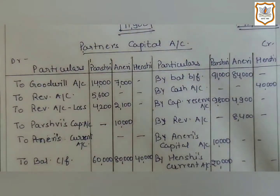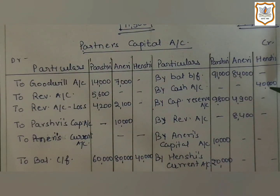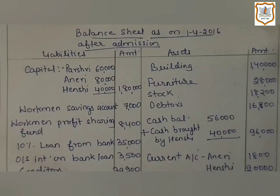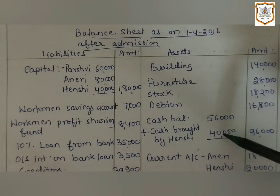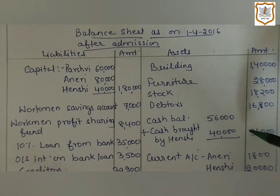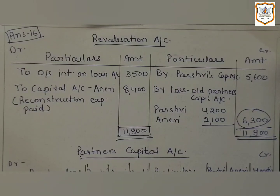We will record 40,000 on the credit side of Hansi's Capital Account. As cash balance increases because of her share of capital, we will add it to the cash balance. In the outer column we will get 96,000 as cash balance. In the third point, it is given that interest on bank loan is outstanding for one year.